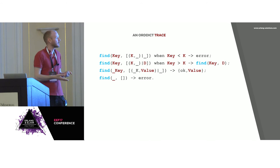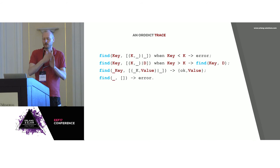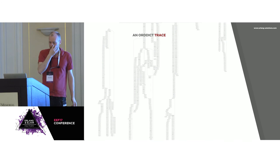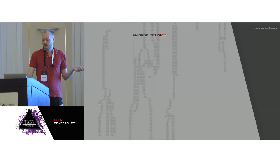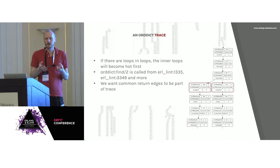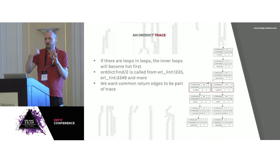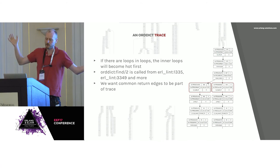Another, more complex example: getting a trace of orddict. This is the orddict function, which basically searches through a list to find a specific element. When I start up the system, I get a trace on this. The trace looks a lot more complex — it's not run as much and it's a lot less predictable. The reason is that the caller is part of the trace. In this kind of tracing, the most internal loop will be the first one detected as hot. Since orddict:find is looping on itself to find a value in a list, it becomes hot very quickly — but orddict:find is called from many different places, and the actual return to those different places causes an explosion of trace nodes.